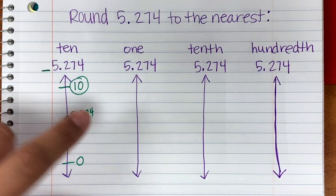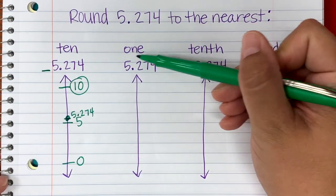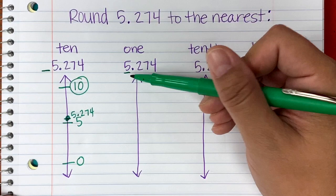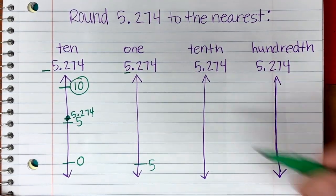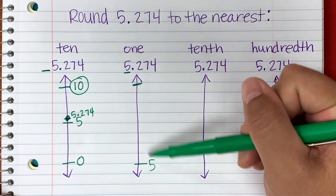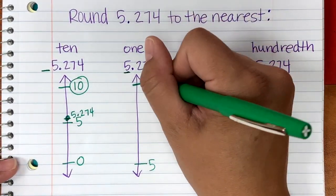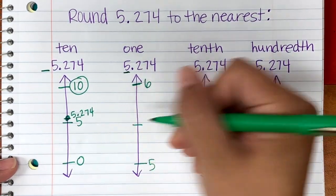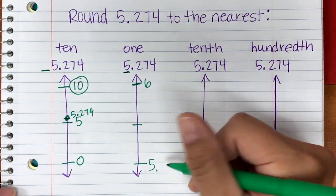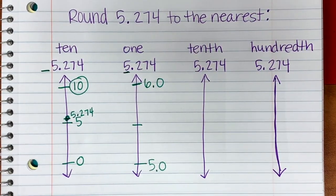Same process for rounding to the nearest one. First, we underline the digit in the ones place, which is 5. Whatever you underline is your floor, so the floor is 5 — and everything after it is a zero. The ceiling is the ones digit plus one, so five plus one is six. Six ones gives us a ceiling of six. Then we need to find the midpoint. Whole numbers have a decimal with zeros after them even if you don't always see it.